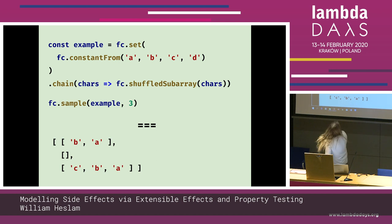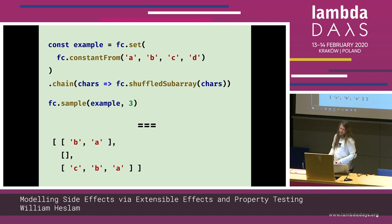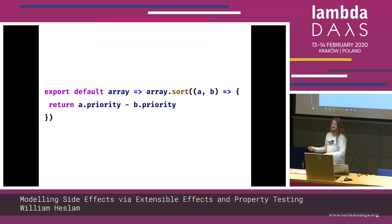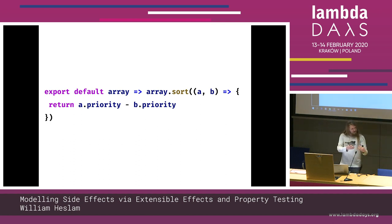Let's look at a real example. Say we're writing a backend service that processes a number of events coming in, and we want to make sure we always process them in a specific order — otherwise we might get some weird accounting problem. Maybe we try to subtract money from someone's bank account before we've added money in, or delete someone's account before they've signed up. You've got events with three fields — date, type, and priority — and we want to always sort them in priority order.